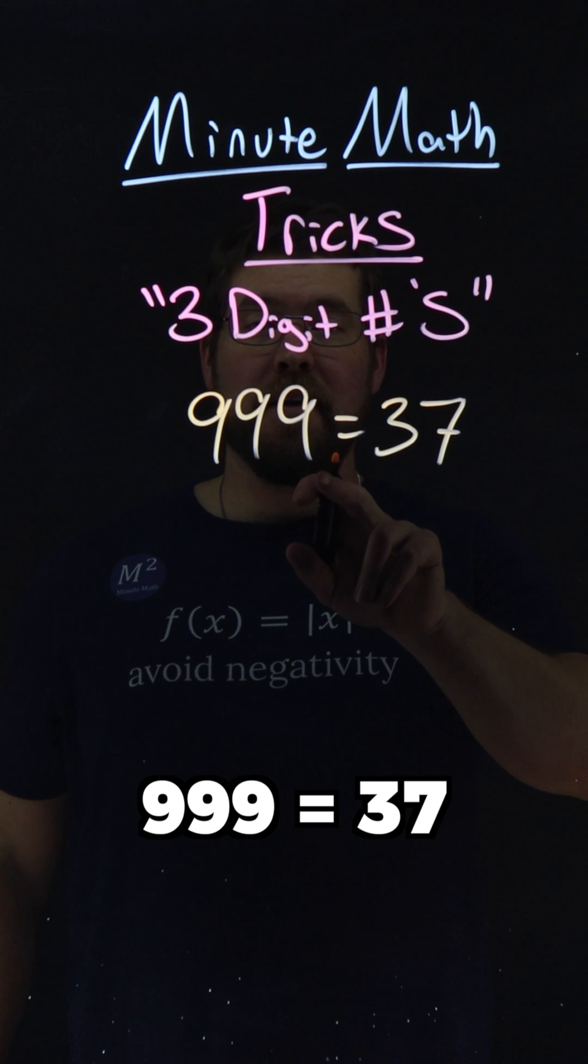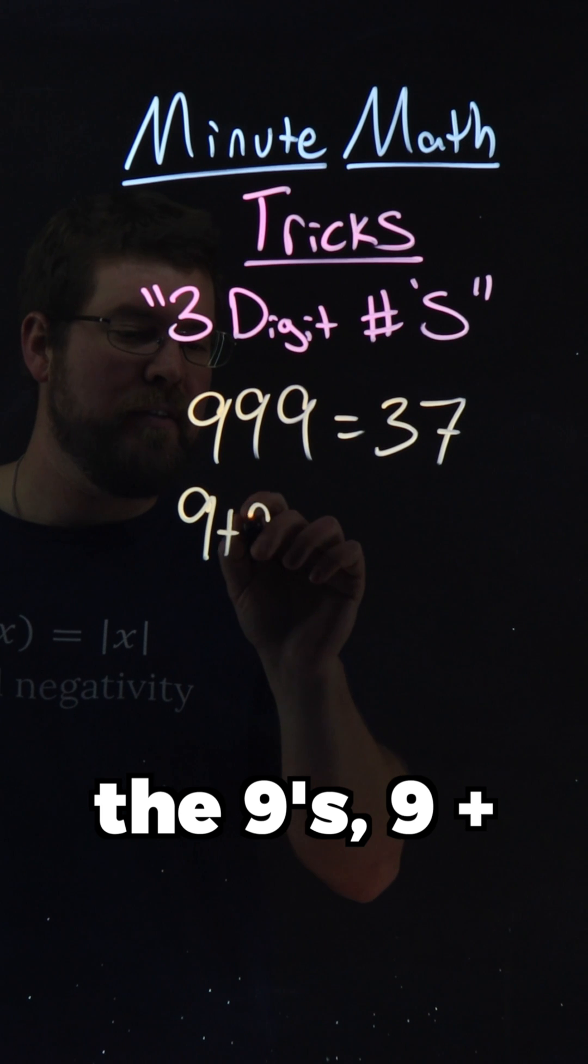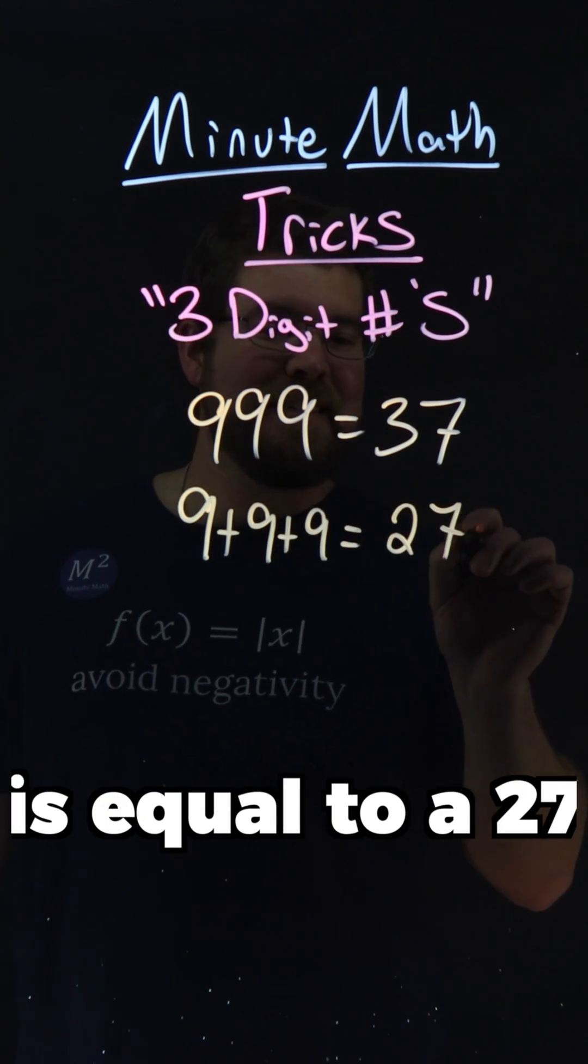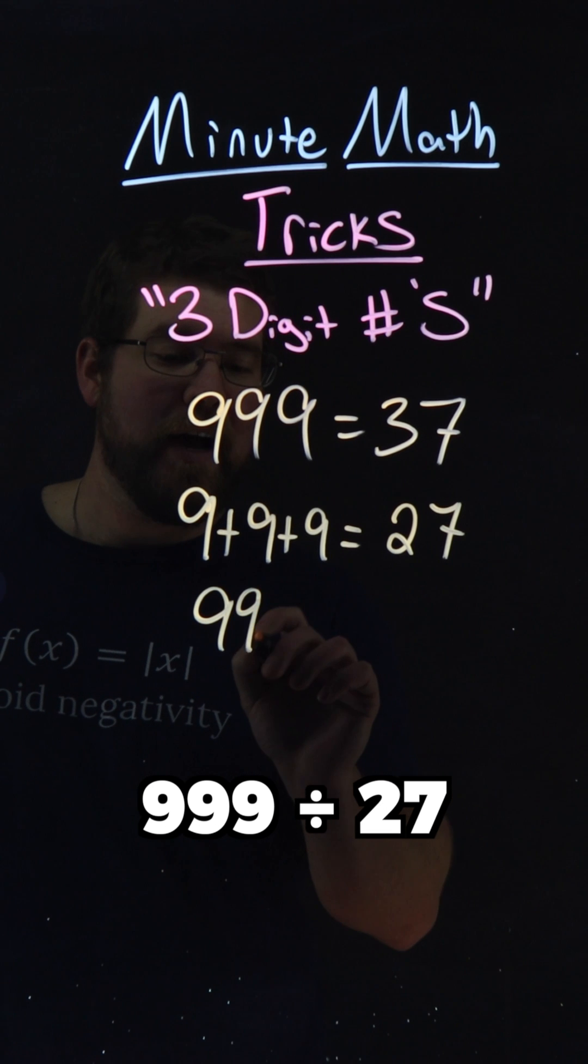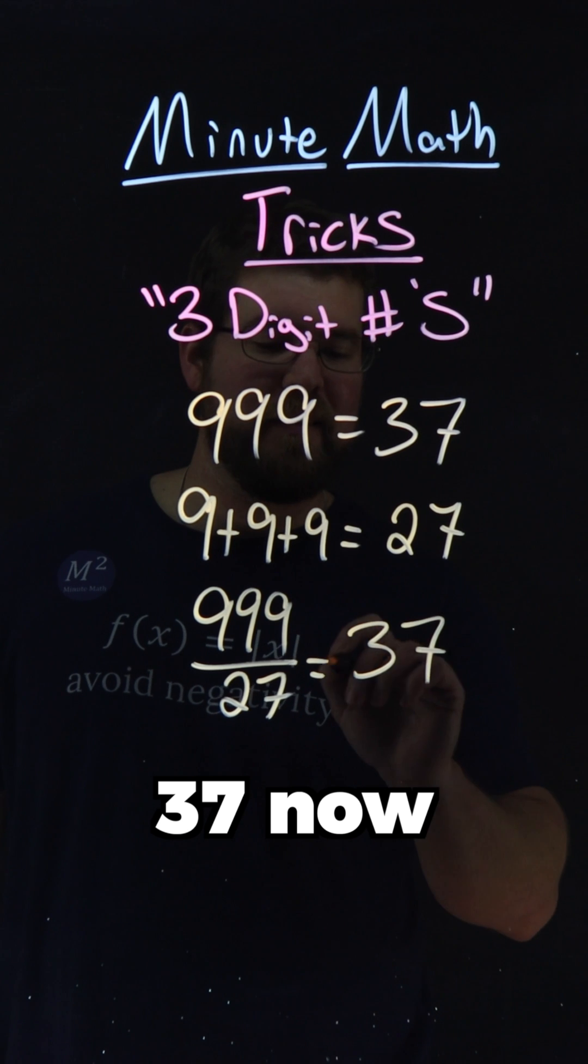999 equals 37. Let's add the 9s. 9 plus 9 plus 9 is equal to 27. 999 divided by 27 equals 37.